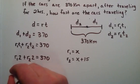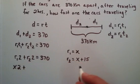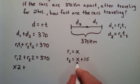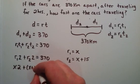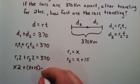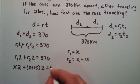We're going to replace r1 and r2 with these corresponding values. r1 now becomes x, so x times 2 plus r2 is going to be x plus 15. Put that in parentheses since we want the entire quantity of r2 multiplied by 2. And that equals 370.